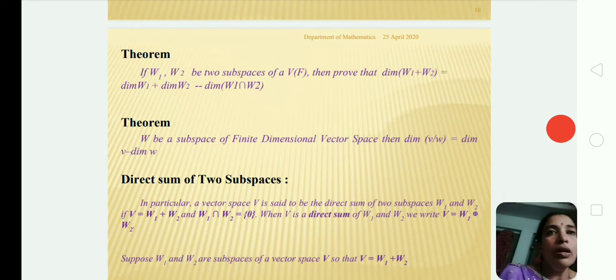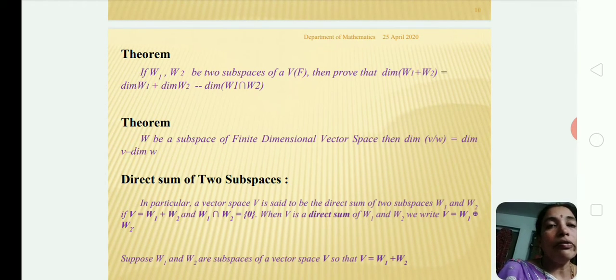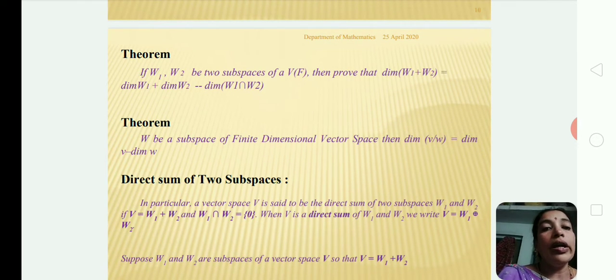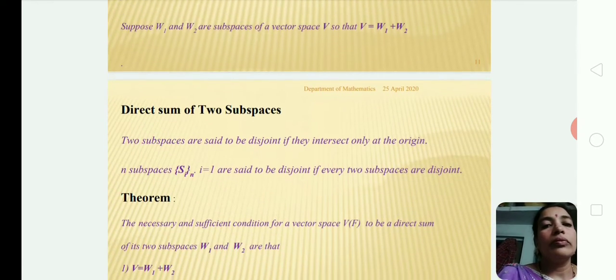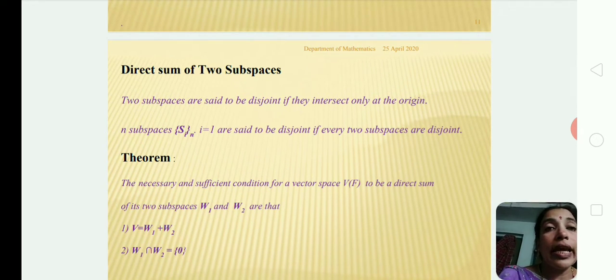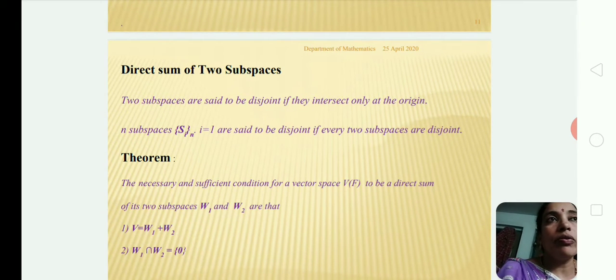Let V3 over R be a vector space. W1 = {(a, b, 0) : a, b ∈ R} and W2 = {(0, 0, c) : c ∈ R}. These are two subspaces of V3 over R. For alpha = (a, b, c) in V3 over R, we can write alpha = (a, b, 0) + (0, 0, c). This expression is unique, so V is a direct sum of W1 and W2, i.e., V = W1 ⊕ W2.